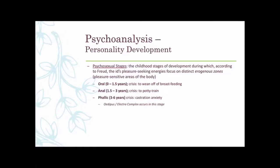The Oedipus complex refers to a boy's sexual attraction to his mother. The boy feels jealous of his father and competes for his mother's affection. The crisis is castration anxiety — the boy is anxious about being castrated by his father if his father discovers his attraction. Ultimately, to resolve the crisis, the boy begins identifying with his dad and becoming more like him. The subconscious thought is: if I can't have my mother, I need to become like my dad who does have her.